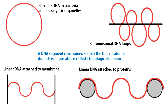The chromosomal DNA of eukaryotes is linear overall, but consists of large DNA loops firmly attached to the nuclear matrix. These loops represent topological domains, i.e., they are equivalent to circular DNA topologically. Similarly, DNA attached to the membrane and those attached to proteins behave as similar topological domains.